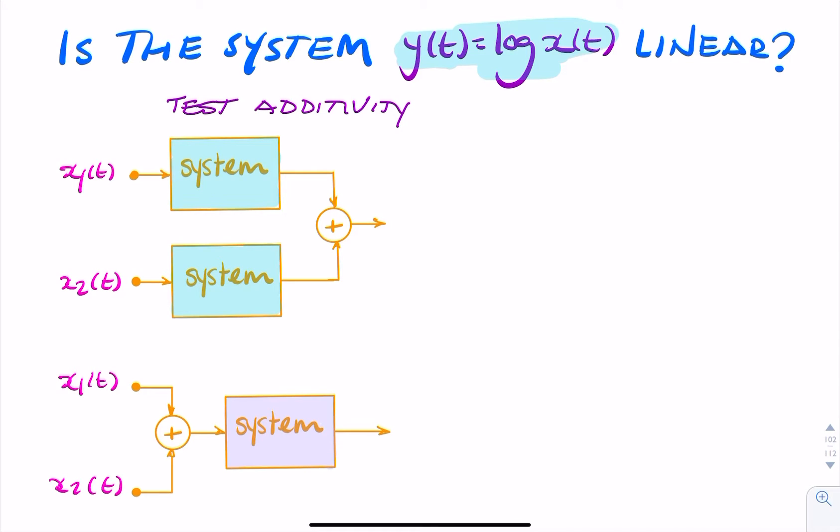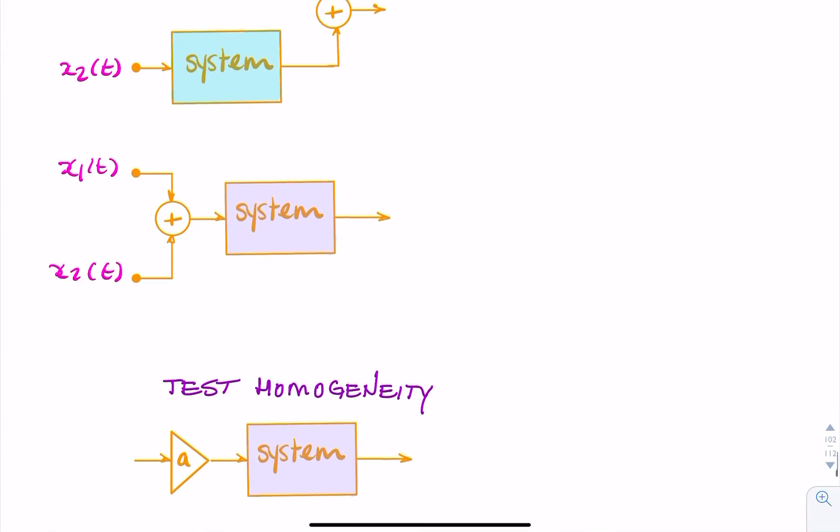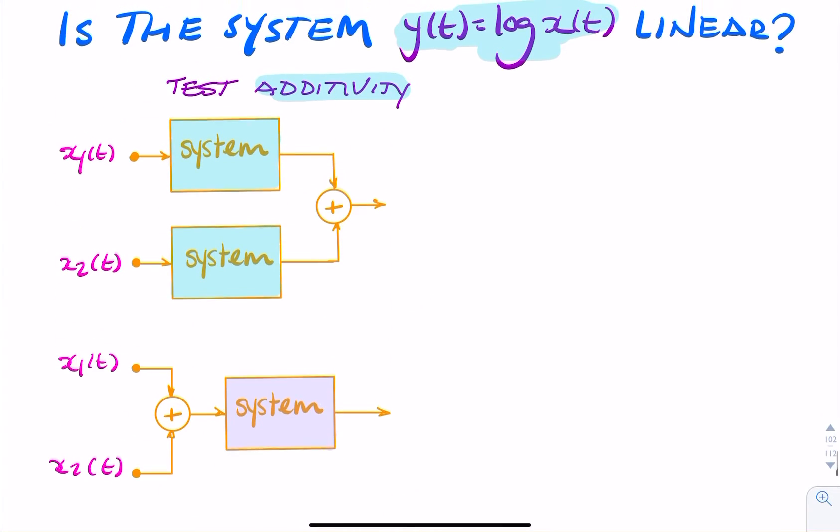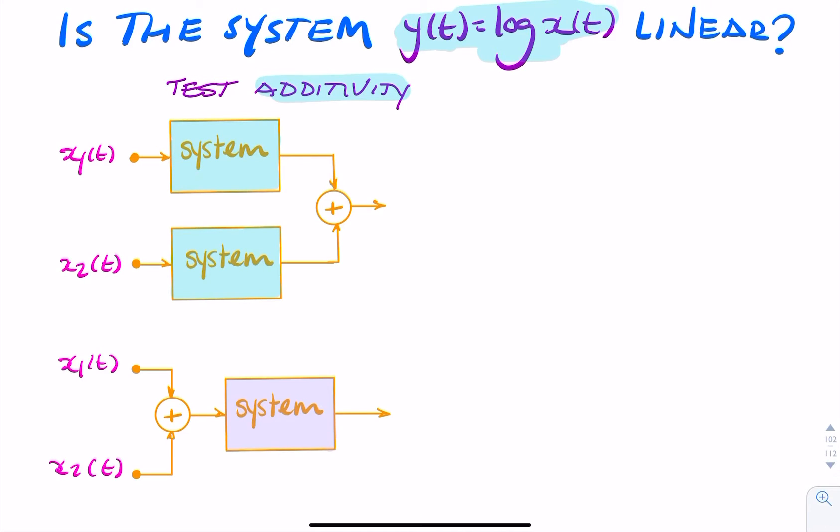To find that out we test if it's additive. If it is, we then test if it's homogeneous (scaling). But first we test additivity because that's where most such systems fail.